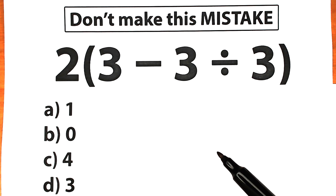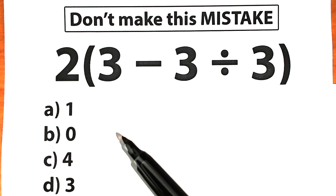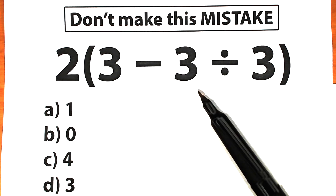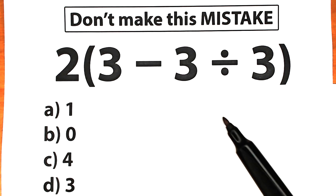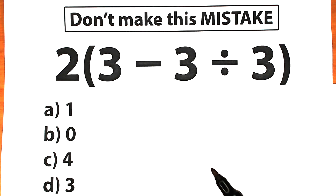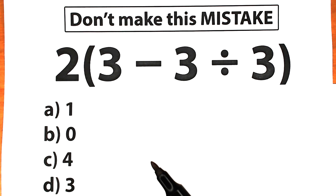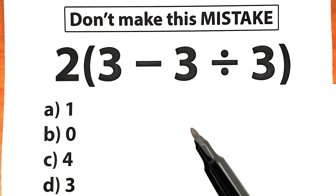Welcome back to my channel Mathematics, and today we have a very tricky challenge: 2 times, open parenthesis, 3 minus 3 dividing by 3, close parenthesis. Maybe this is the easiest challenge ever seen, but a lot of students make this common mistake. They don't know what is the correct order, what is the correct property, the correct solution — and they argue with each other about that.